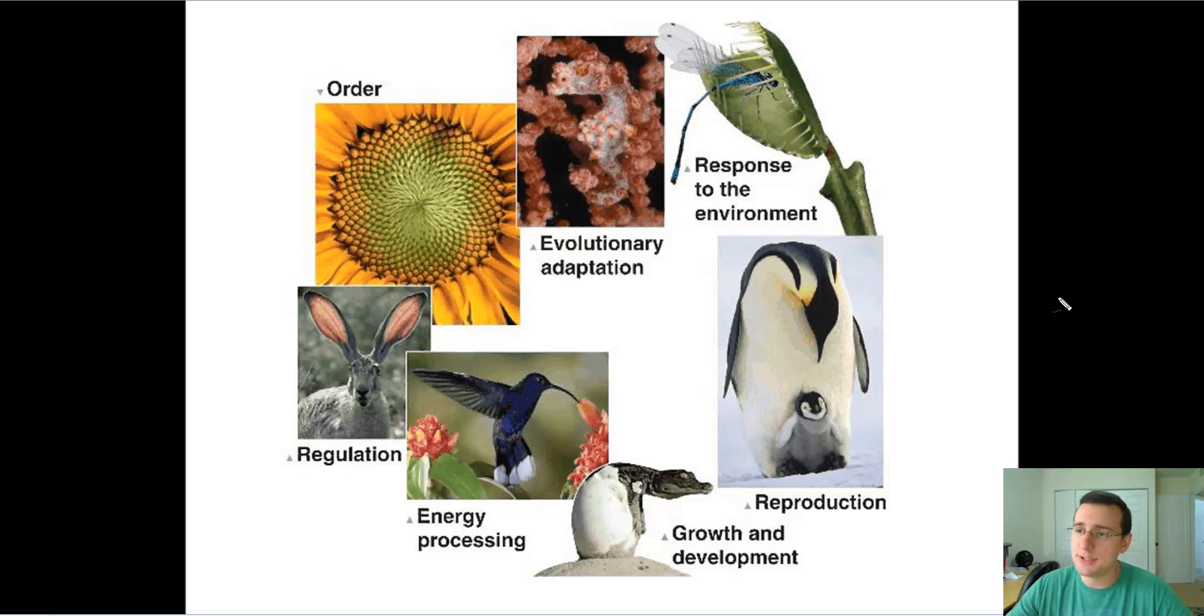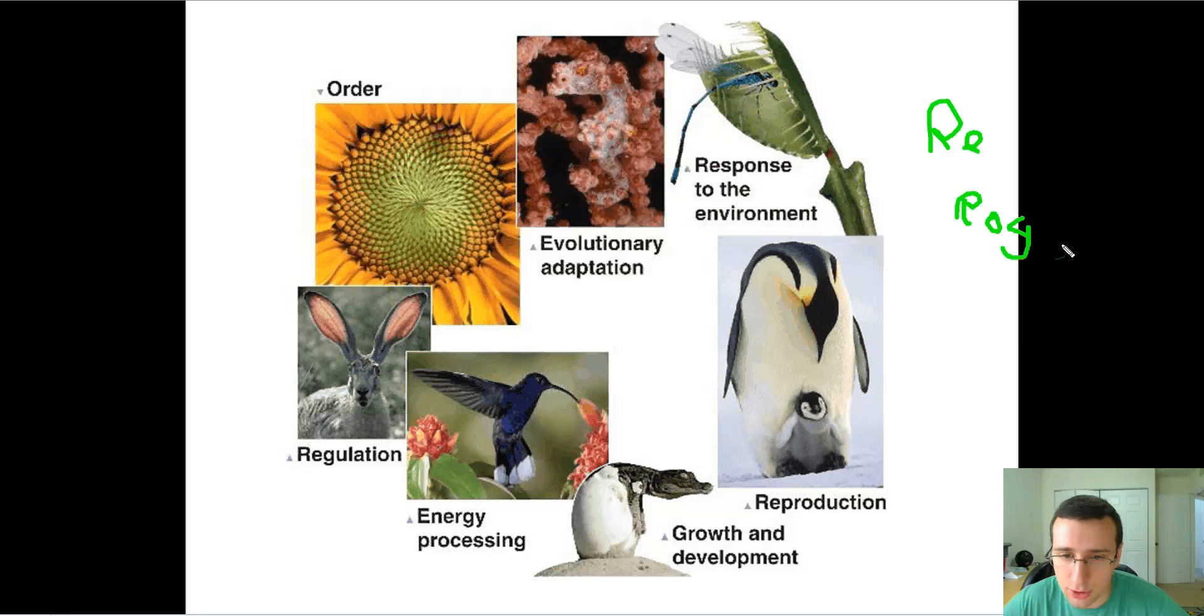It will try to maintain order, evolve over time as a population, respond to the environment, reproduce, grow and develop, use energy, and regulate. I use the following mnemonic to remember that: Re-Roger. Roger is some dude that asks you what it means to be alive, and you send him an email reply. Roger means to understand in military language. So Re-Roger is R for response, E for evolution, R for regulation, O for order, G for growth and development, E for energy, and R for reproduction. Remember that DNA is an aspect of reproduction, and order includes having cells.